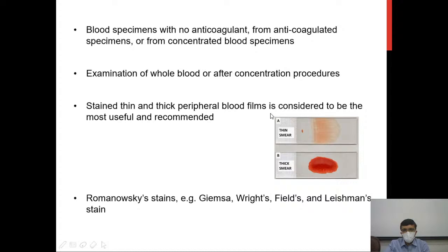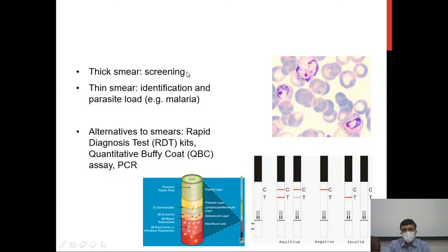Stained thin and thick peripheral blood smears are considered the most useful and recommended methods for looking for blood parasites. Thick smears are mainly used for screening due to higher sensitivity, while thin smears are used for identifying parasite morphology and determining parasite load. This may be significant in conditions like malaria, where parasite load has relevance for management and determining prognosis.